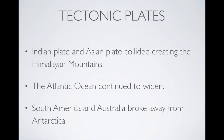The North American plate and the Eurasian tectonic plate were moving further apart, which allowed the Atlantic Ocean to widen. But the most important tectonic plate movement during this time was South America and Australia — the plates those two continents lie on broke away from Antarctica. This created a shift in ocean currents, which affected the climate, the marine life, and indirectly the land life as well.